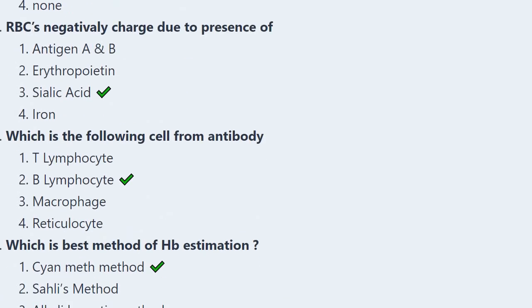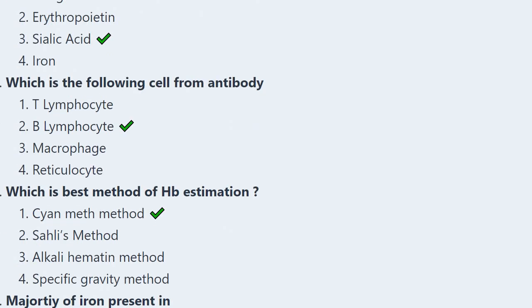Next: RBC is negatively charged due to the presence of — antigen A and B, erythropoietin, sialic acid, or iron? The correct answer is option 3, sialic acid.